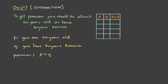To get pension, you should be at least 60 years old or have 20 years of service. And here is the connective OR. This statement can be broken into simple propositions: P — you are 60 years old; Q — you have 20 years of service. And to get pension, P or Q.